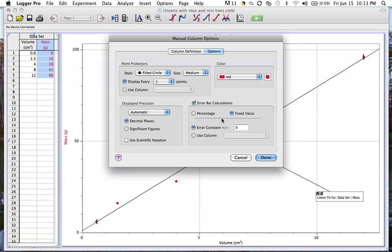Now there are two ways that I can add my uncertainty bars. I can add a fixed value, or if you've propagated your uncertainties as a percentage, you can click on percentage.